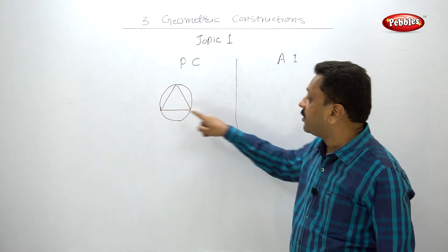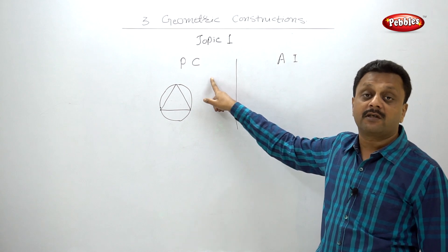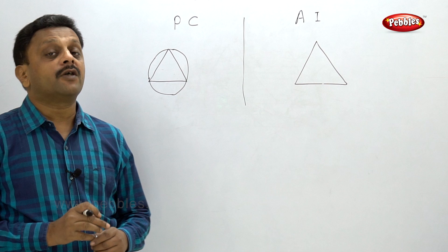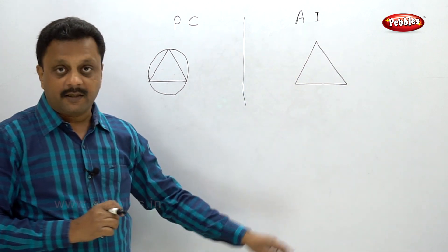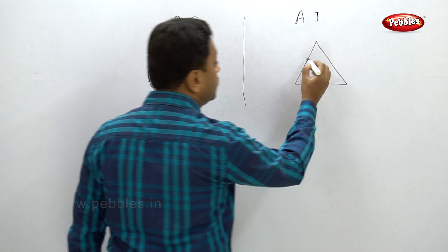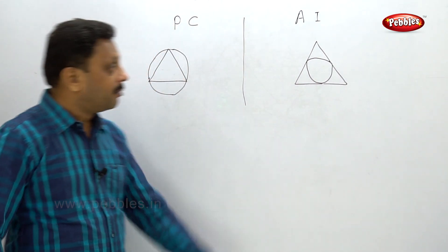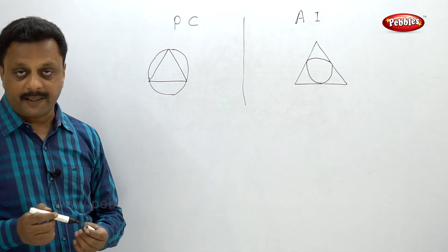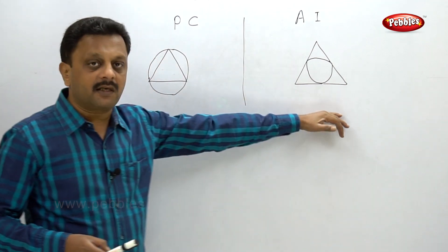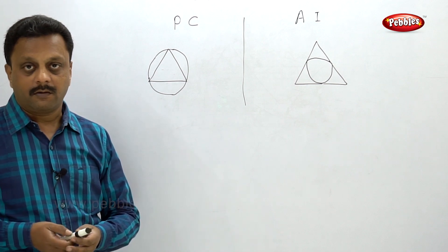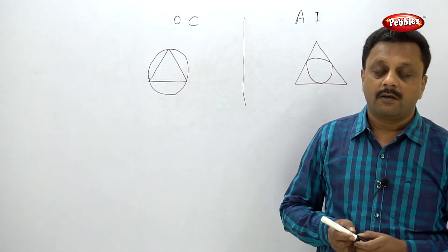The circum circle passes through all three vertices of the triangle — all three vertices will lie on the circumference of this circle. In the case of the in circle, it is the circle which touches all three sides from inside the triangle. So remember: the in circle is inside the triangle touching all three sides, and the circum circle passes through all three vertices.